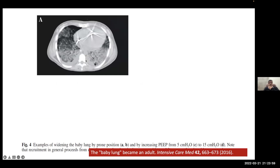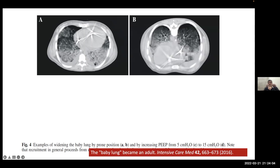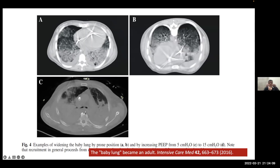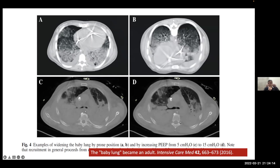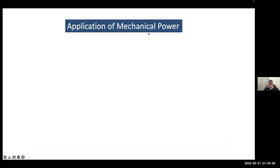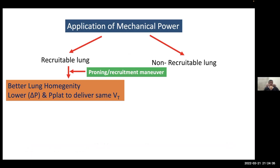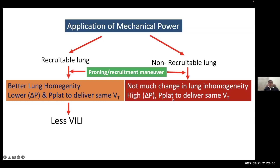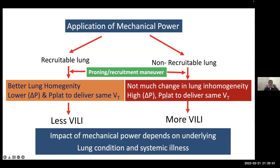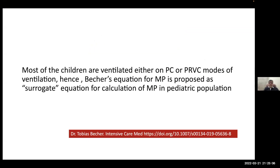The best available method to encourage lung homogeneity is prone positioning. Gattinoni demonstrated in 2016 how proning helps atelactatic lungs at the dependent parts — after proning, excellent lung homogeneity is achieved. In another patient, increasing PEEP from 5 to 15 still left lungs poorly recruited, while proning achieved far better recruitment. Thus, proning is a better recruitment strategy than simply increasing PEEP. Application of mechanical power depends on whether the lung is recruitable. If recruitable, performing proning, recruitment maneuvers, or good PEEP titration will improve lung homogeneity, lower driving pressures and plateau pressures for the same tidal volume, and reduce VILI. If the lung is not recruitable, these maneuvers will not improve homogeneity and you will end up with high plateau pressures, high driving pressures, and more lung injury.